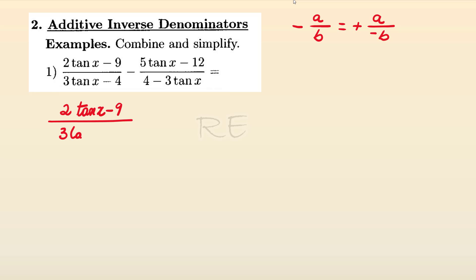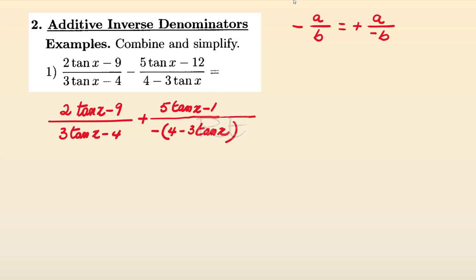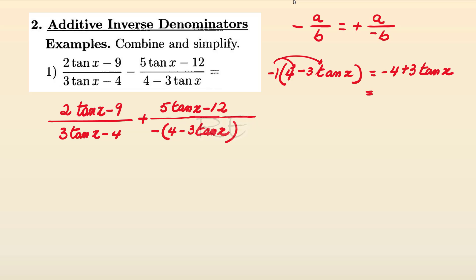We have 2·10^X minus 9 divided by 3·10^X minus 4, plus — we will move the negative sign to the denominator — negative open parenthesis 4 minus 3·10^X, and we keep the numerator the same: 5·10^X minus 2·10^X. When we distribute the negative sign over 4 minus 3·10^X, we get negative 4 plus 3·10^X, which is the same as 3·10^X minus 4.